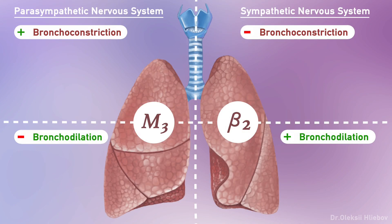Excitation or stimulation of M3 cholinergic receptors causes contraction of smooth muscle cells in the bronchial tree and, as a result, bronchoconstriction. Blockade of M3 cholinergic receptors causes relaxation of these smooth muscle cells and, as a result, bronchodilation. Stimulation of beta-2 adrenergic receptors causes bronchodilation, and blockade of beta-2 adrenergic receptors causes bronchoconstriction, as a result of relaxation or contraction of smooth muscle cells respectively.